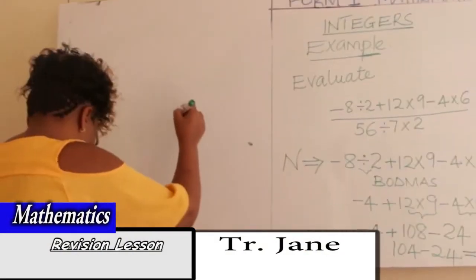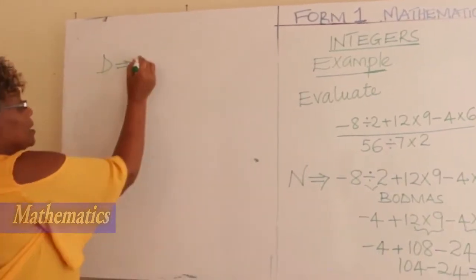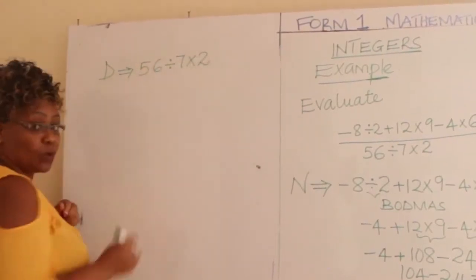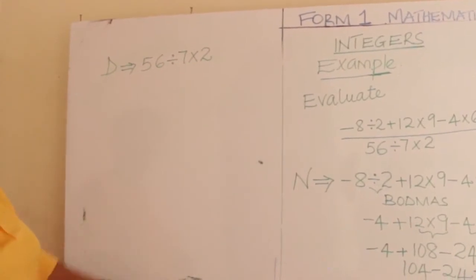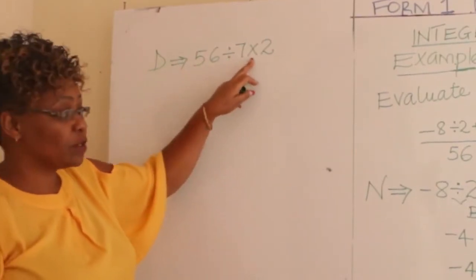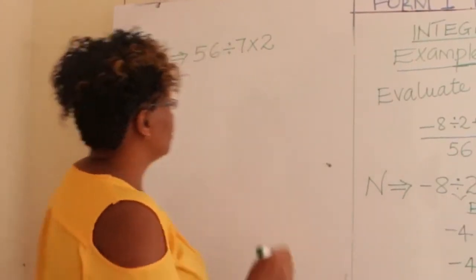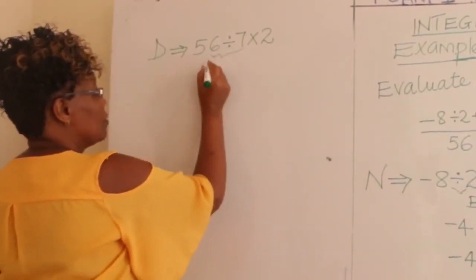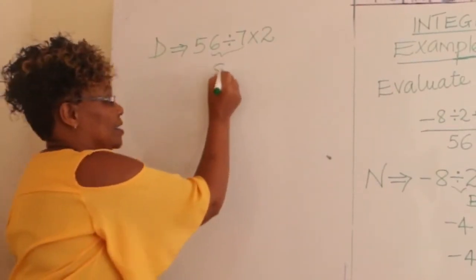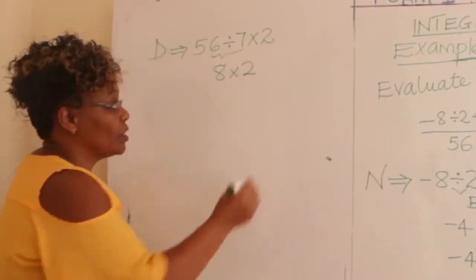Now go to your denominator. Write it down: 56 divided by 7 times 2. Applying BODMAS again — we have division followed by multiplication, so we start with division. 56 divided by 7 is 8. Then we multiply by 2: 8 times 2 gives you 16.